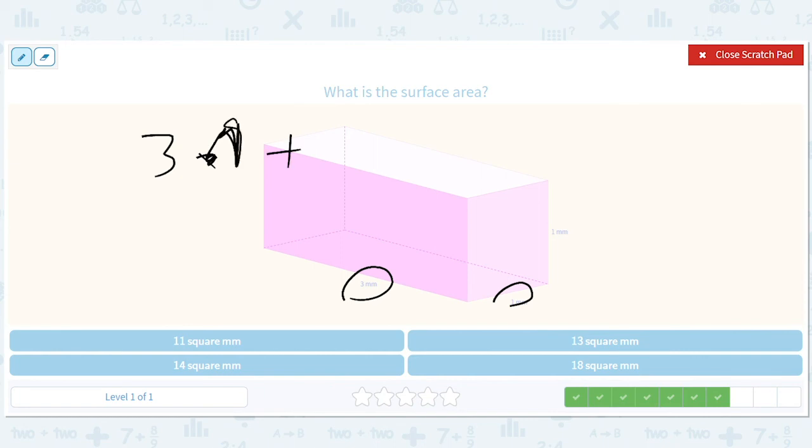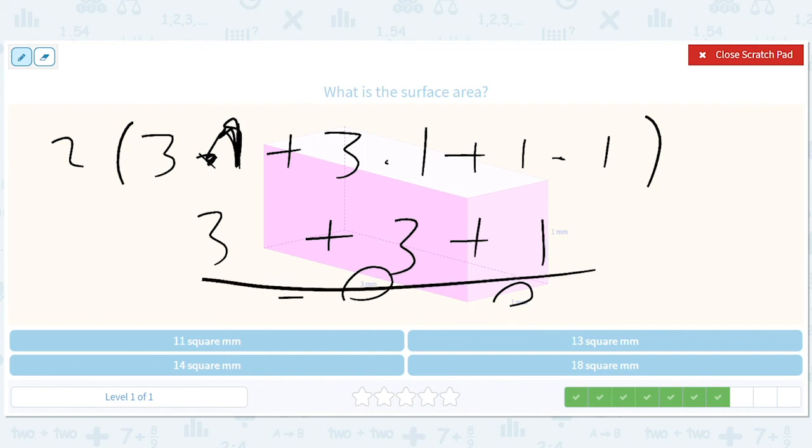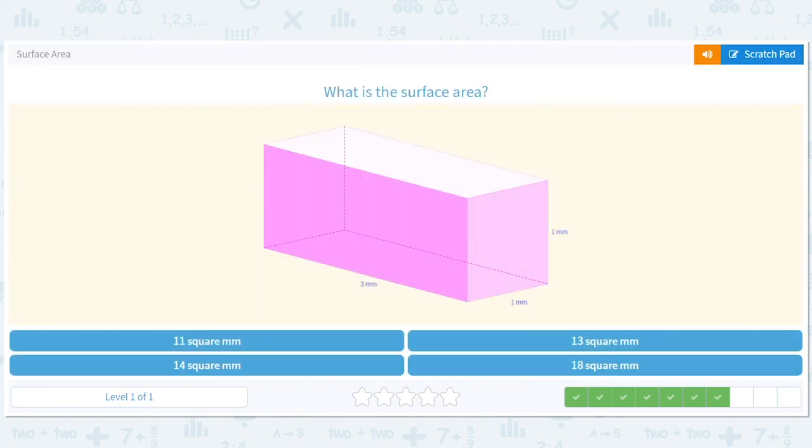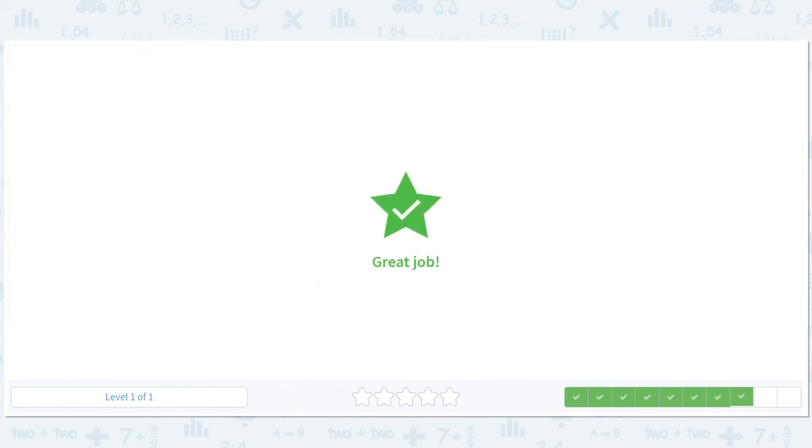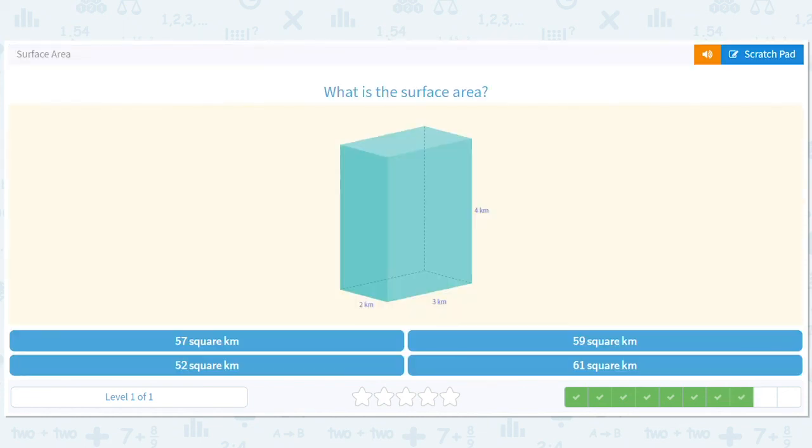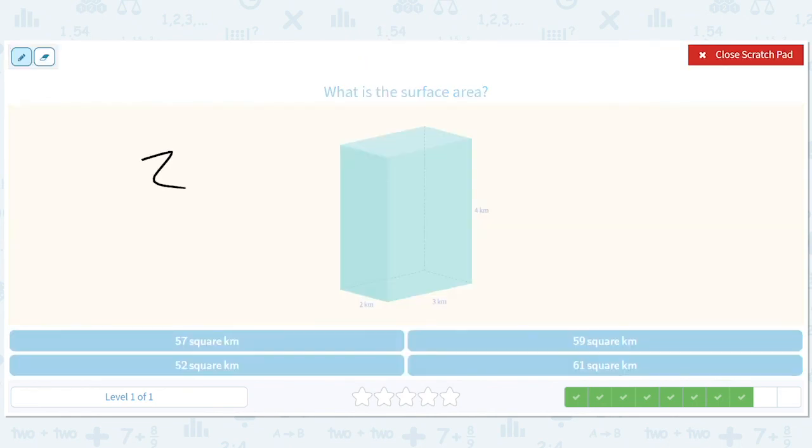This is 3 times 1 plus—sorry that's a 1—plus 3 times 1, that's a really ugly one, plus 1 times 1, all times 2. So that's 3 plus 3 plus 1, which is just 7 times 2, or 14.